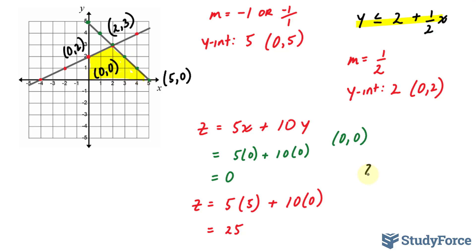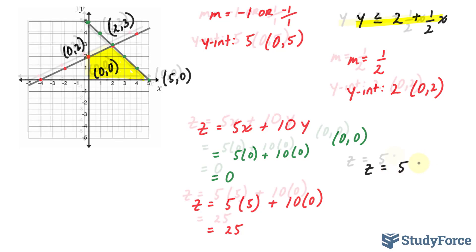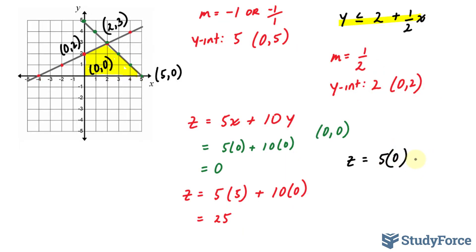Our next point is z equals 5 times 0 plus 10 times 2. That gives us 20.